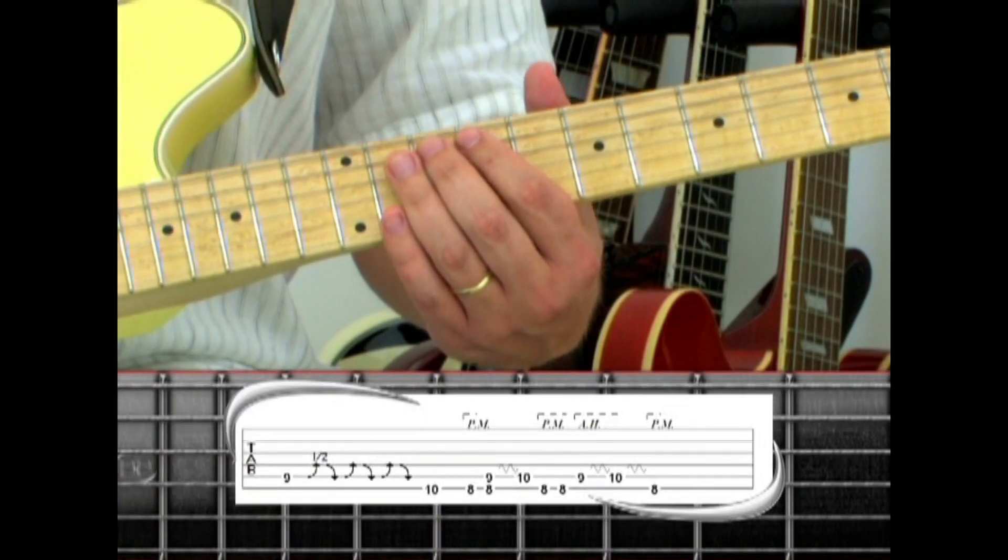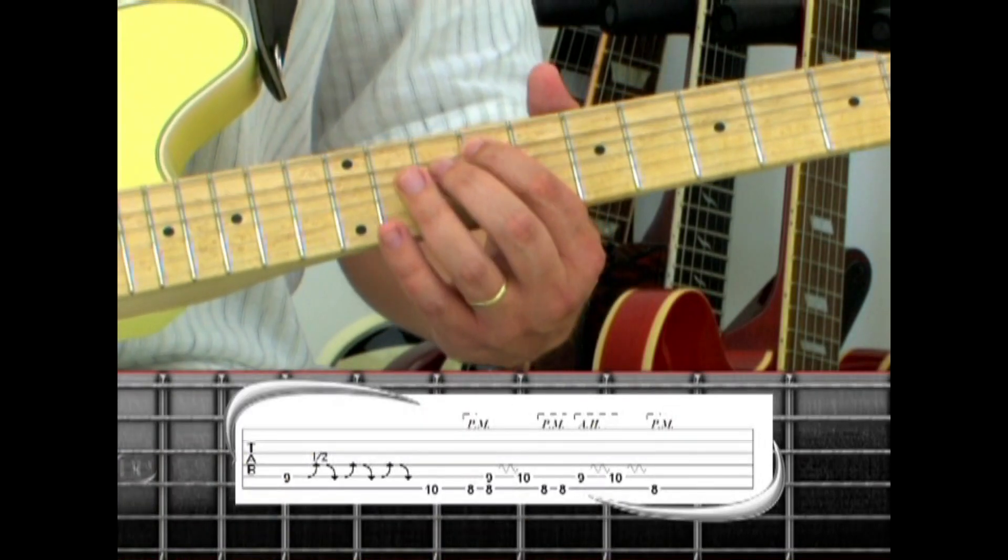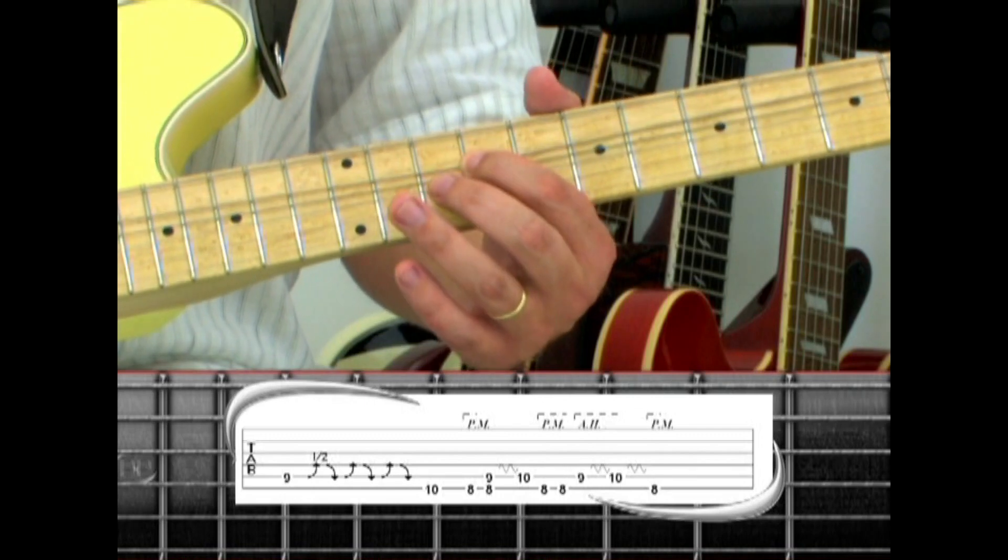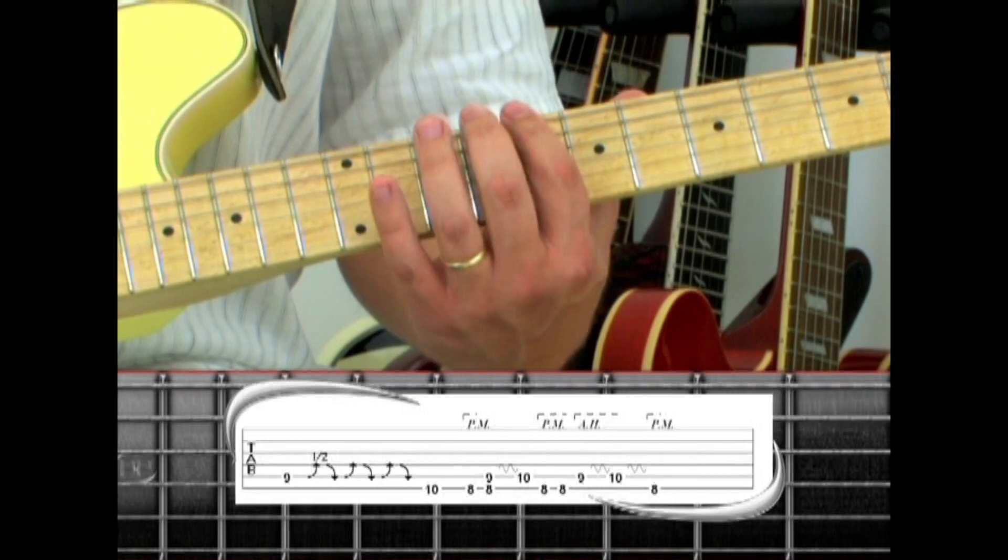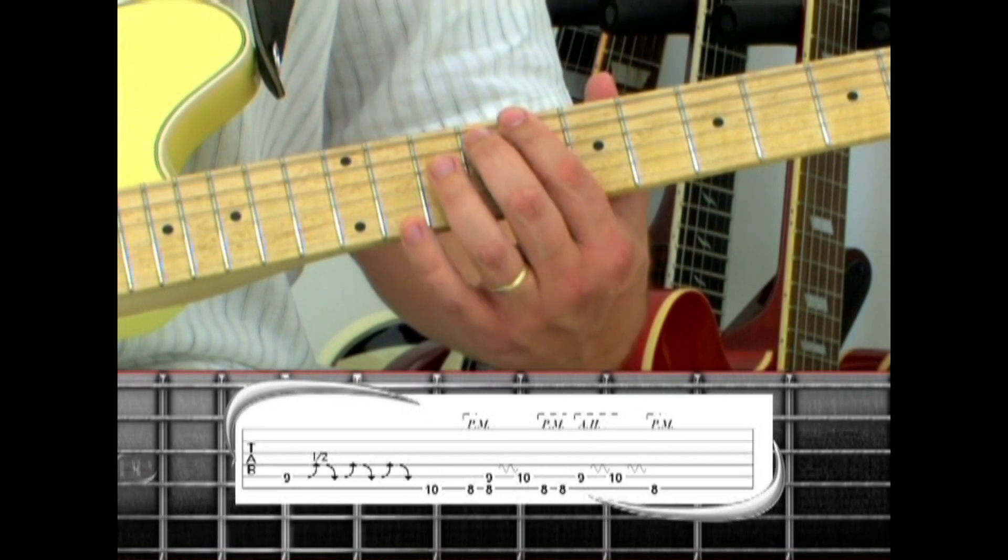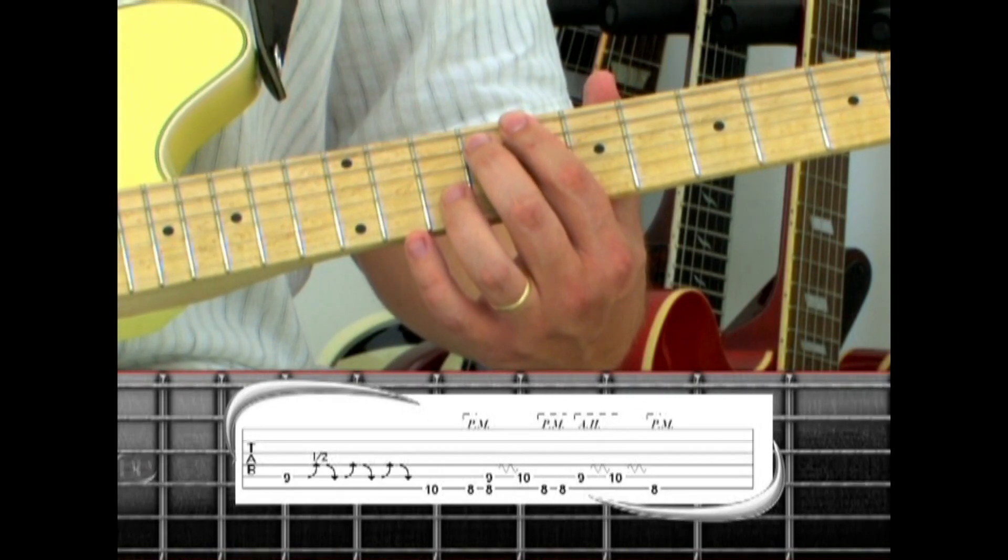5th string 9 with the half-step bend and release 3 times. 6th string 10, then palm-mute 8. Then play 8 again with 5th string 9 adding vibrato to the 5th string.